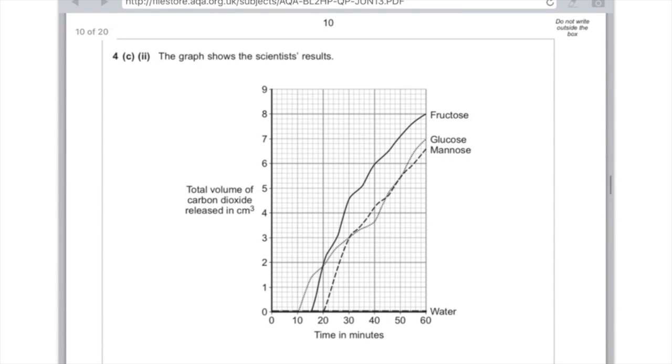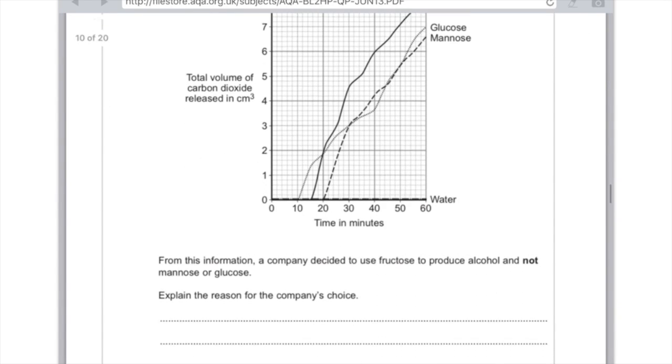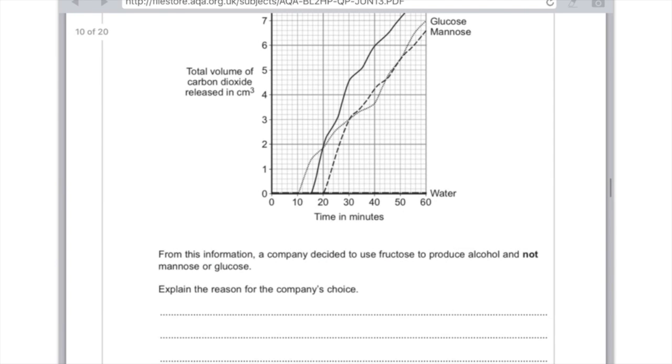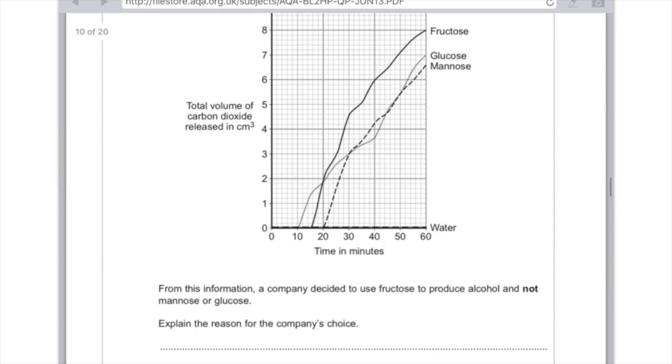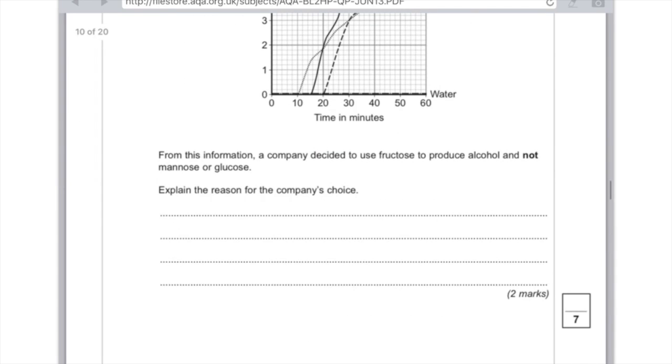4C part 2. The graph shows the scientists' results. From this information, a company decided to use fructose to reduce alcohol and not mannose or glucose. Explain the reason for the company's choice. So let's just have a quick look at that graph. And you could say here that more carbon dioxide is given off with fructose compared with glucose and mannose. And that's due to the faster respiration of the yeast. So you could say that fermentation occurs much more quickly and therefore alcohol will be made much faster. And from a company's point of view, that is a very important thing.